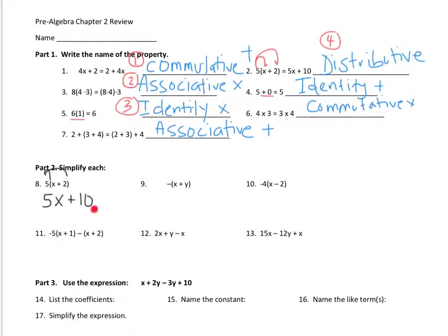This one has an x and that one doesn't. Number nine — you're going to make each one of these opposite, so it's negative x minus y. Number ten — you're going to multiply negative 4 times each, so it's going to be negative 4x and then plus 8. Number eleven — you're going to distribute the property twice, so it's going to be negative 5x minus 5, and the second part is going to be negative x minus 2.